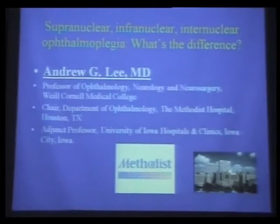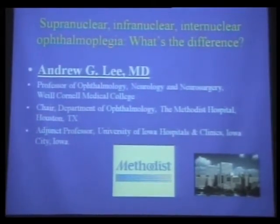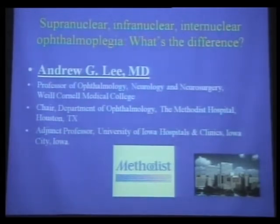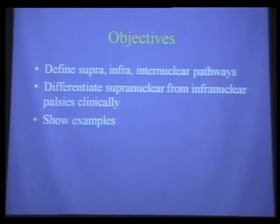I'm going to talk about supranuclear, infranuclear, and intranuclear eye movement disorders. It just means above, below, and between the nucleus. Keep that basic definition in mind—it'll help you avoid the number one error, which is assuming that all double vision is from a nerve.